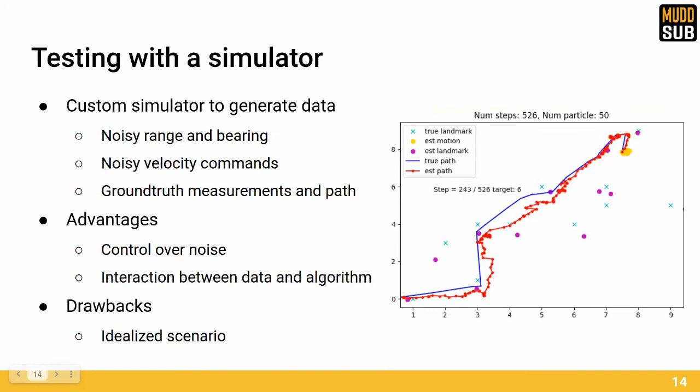Recognizing the limitations with the pre-recorded data in the dataset we tested with, we decided to create a custom simulator to have more control over the robot and the data the algorithm is being tested on. Our custom simulator generates the same type of data as the dataset, i.e., range and bearing measurements and velocity commands. One advantage is that we have control over how noisy it is, and another is that the results of the FASM algorithm can also influence the data generated, which is more realistic and is not possible in the pre-recorded dataset.